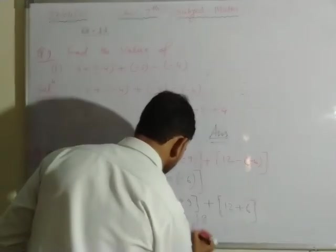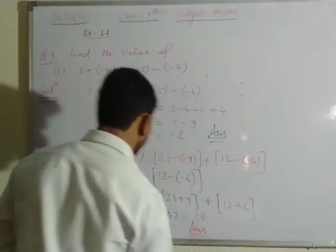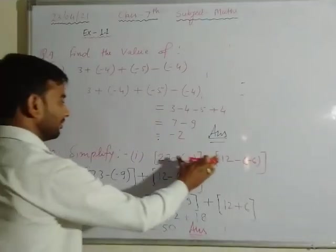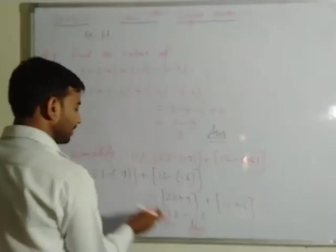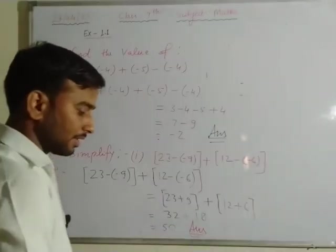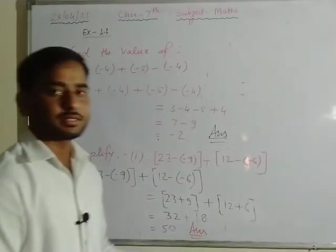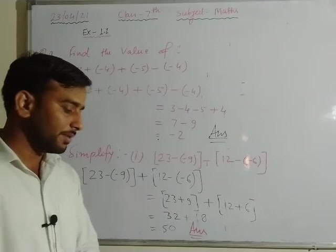So the simplification gives 50. The value comes out to 50. Similarly, the second part of question number 10 will be solved in the same way.